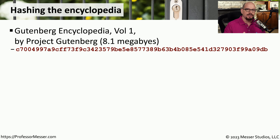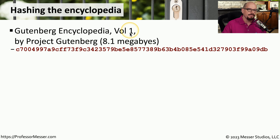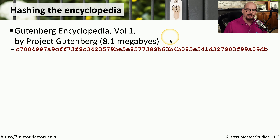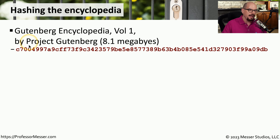Let's see how hashing works with a practical example. There is an organization called Project Gutenberg on the internet, and they have published the Gutenberg Encyclopedia. I downloaded volume one of that encyclopedia — it's 8.1 megabytes of data. I then ran an application that took all of that data and created a hash, or fingerprint, of that particular encyclopedia volume one. Here is the exact hash created from that volume.